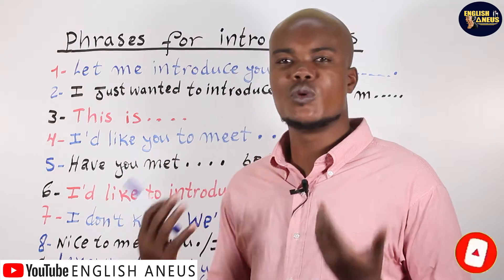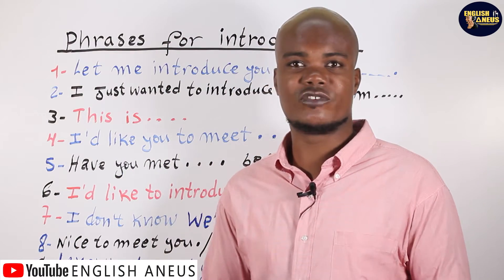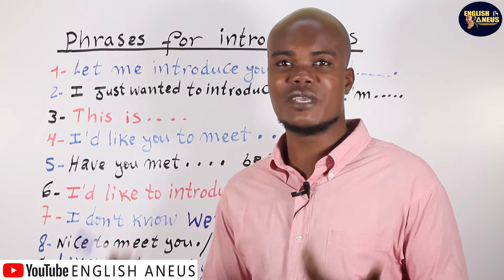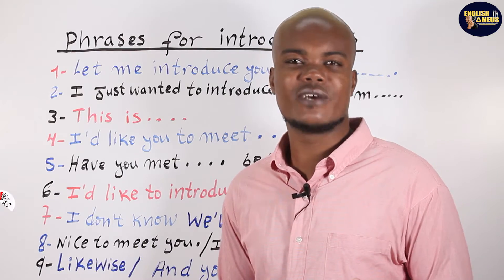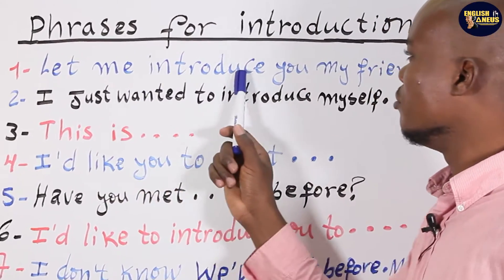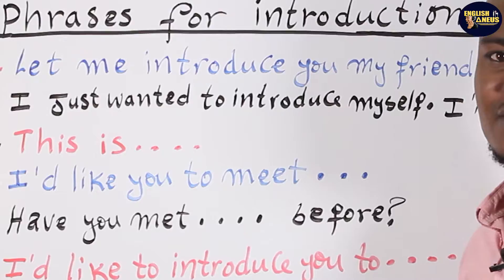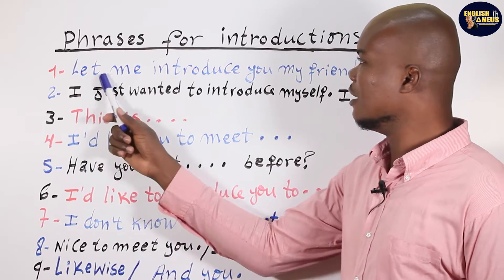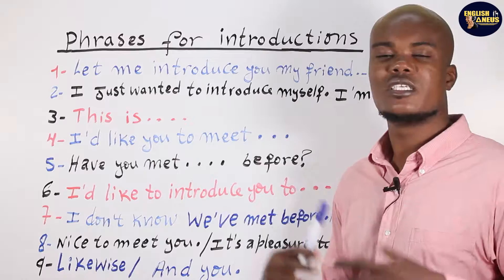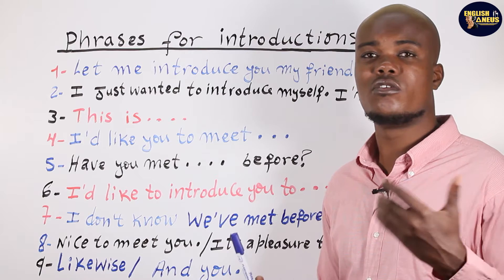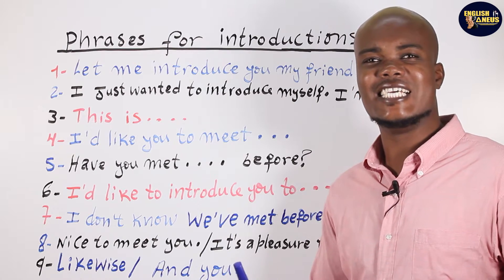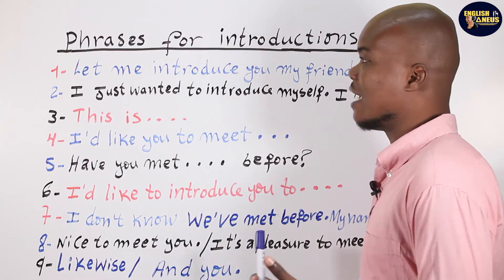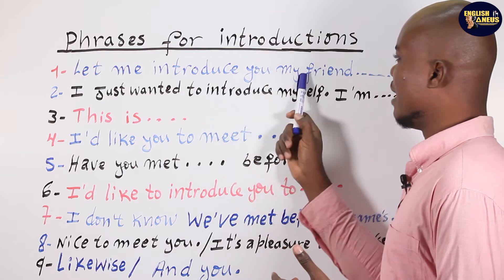Let's get started! To introduce someone to someone else — for example your friend to someone else — you can use this phrase: 'Let me introduce you to my friend.' For example, if you have your friend Jack, you can say: 'Let me introduce you to my friend Jack.'